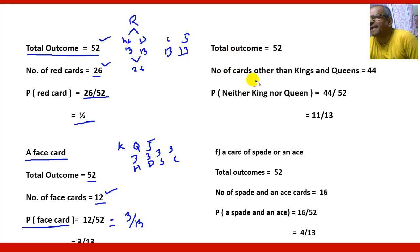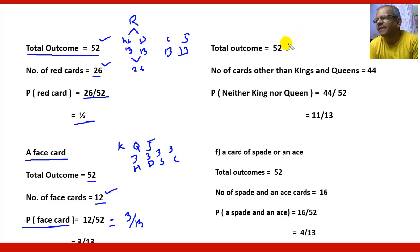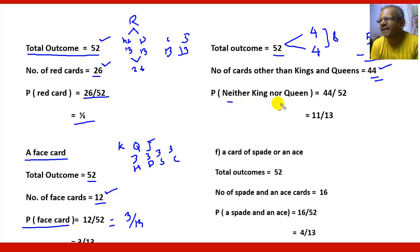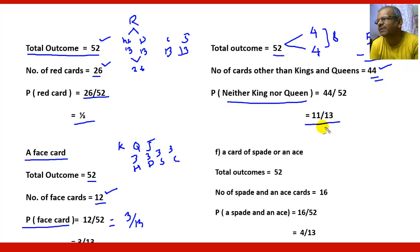The next question is: what is the probability of getting neither a King nor a Queen? Kings and Queens are not favorable here. In a total of 52 cards, there are 4 Kings and 4 Queens, which together make 8. So 52 minus 8 equals 44, making 44 the favorable cards. Total outcomes are 52 and favorable outcomes are 44, so the probability of neither King nor Queen is 44 by 52, which equals 11 by 13.